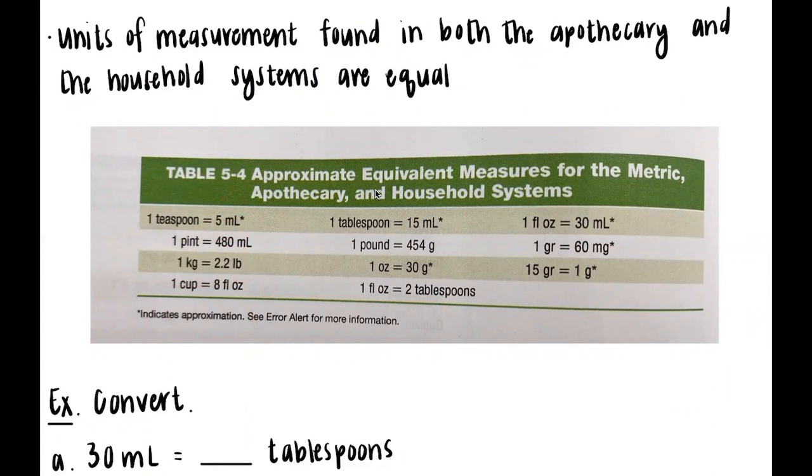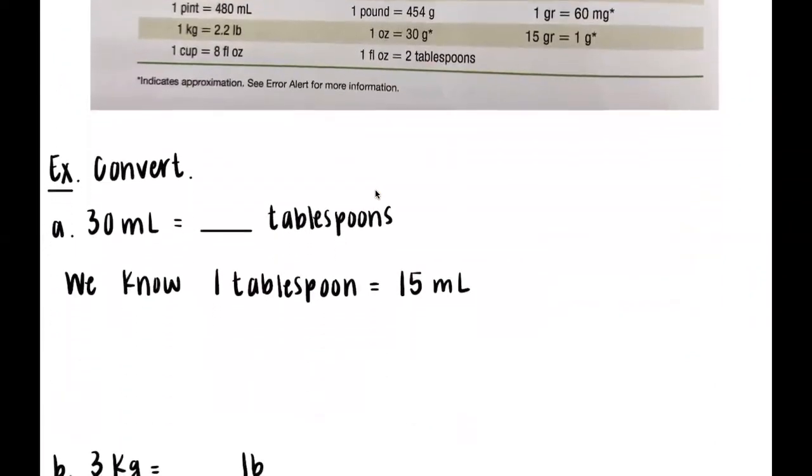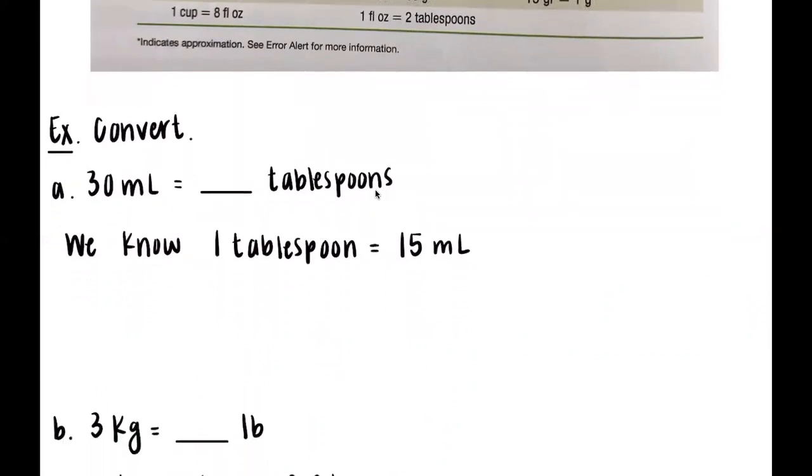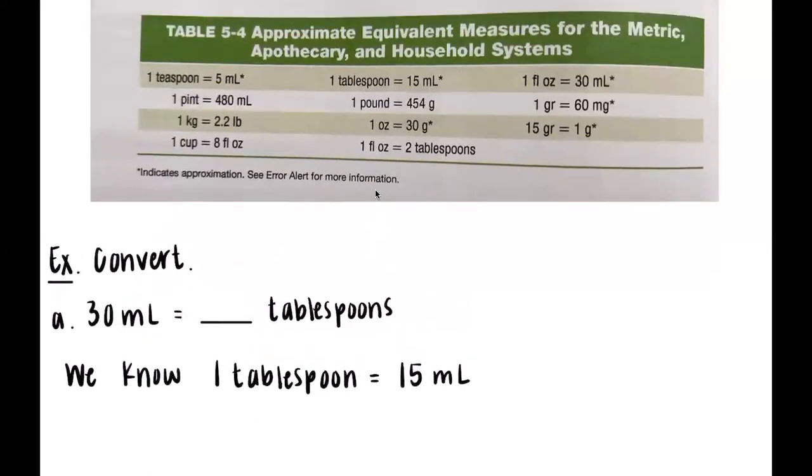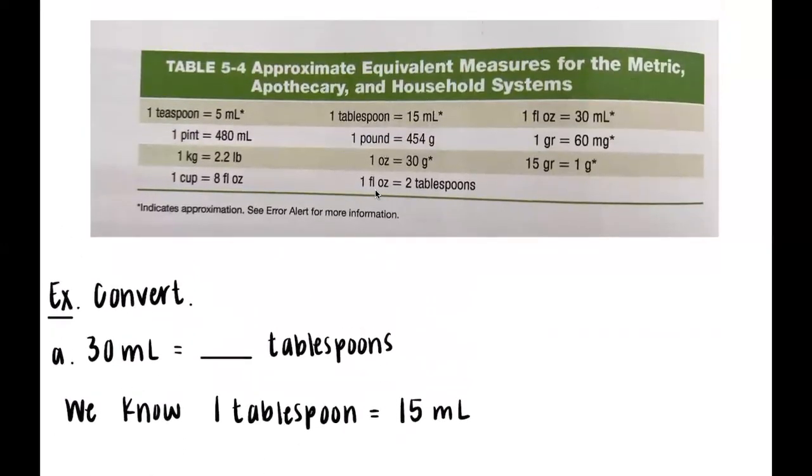We are going to be following stoichiometry for conversions. If you are using a different system, please let me know. Here we can see we're going from 30 milliliters to tablespoons. What we need to know is what is the equivalent measure. We can see that within every one tablespoon there are 15 milliliters, so that is what we're going to need to help go from milliliter to tablespoon.